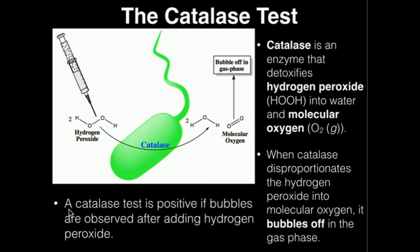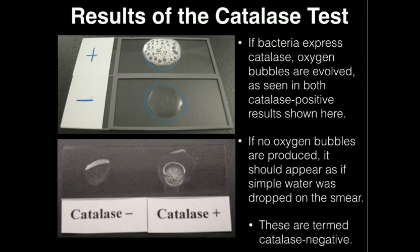The catalase test is positive if bubbles are observed after adding the hydrogen peroxide — a fairly simple result to observe. This is kind of what they should look like: if bacteria express catalase, such as staphylococcus, then oxygen bubbles are going to be evolved — you can clearly see those bubbles in the catalase positive result.